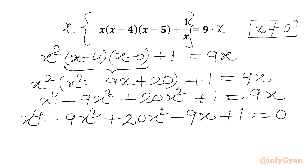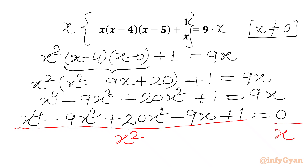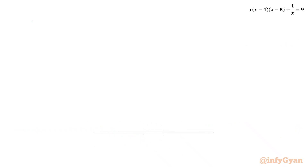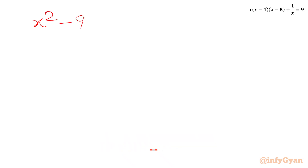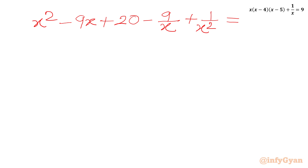Now you can see x cannot be 0, so I am free to divide this equation by any power of x. I will divide by x squared. So x to the power 4 over x squared gives x squared; minus 9x cubed over x squared gives minus 9x; 20x squared over x squared gives plus 20; minus 9x over x squared gives minus 9 over x; and 1 over x squared gives 1 over x squared. RHS is 0.